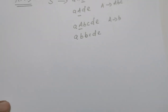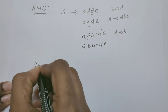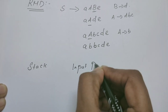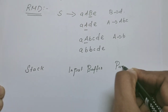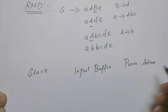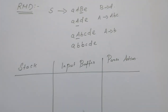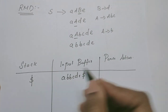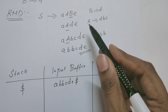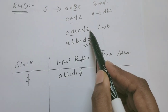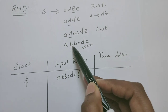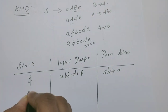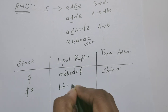Since we have derived the given string using rightmost derivation, there is no confusion in showing the parser action. The table has three columns: stack, input buffer, and parsing action. Using the shift-reduce parser concept, we are going to parse the given string. The string is available in the input buffer with dollar at the end. The stack is initially empty. Following this RMD in reverse order — from the last step to the previous step, B has to be reduced to A. So first, shift A. Stack contains dollar, A. Input buffer contains B, B, C, D, E, dollar.